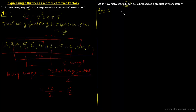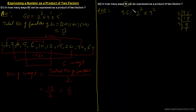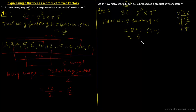We write 36 as a prime factorization: 36 = 2² × 3². The total number of factors of 36 is (2+1)(2+1) = 3 × 3 = 9. So 9 is the total number of factors of 36.